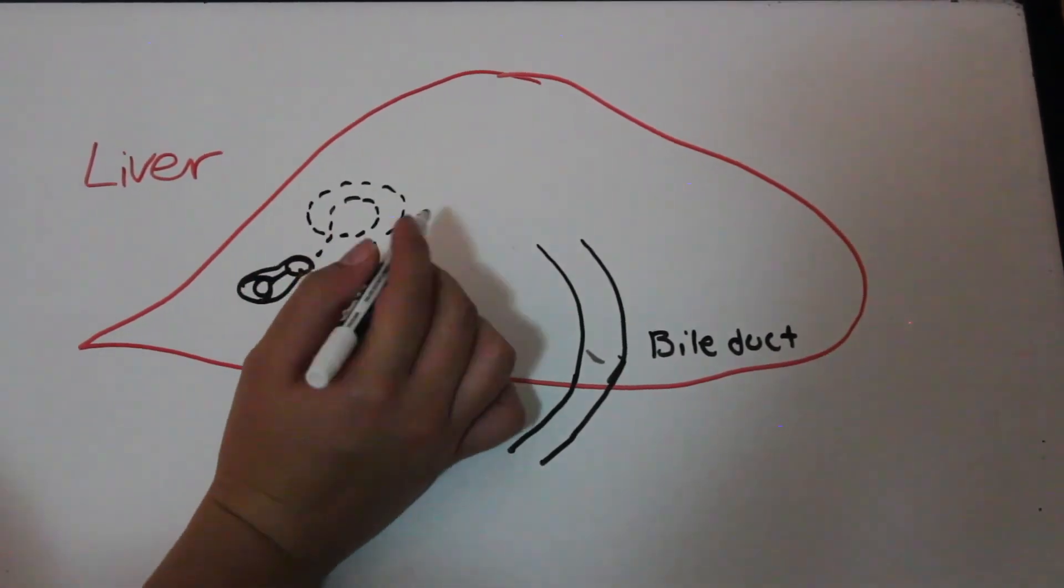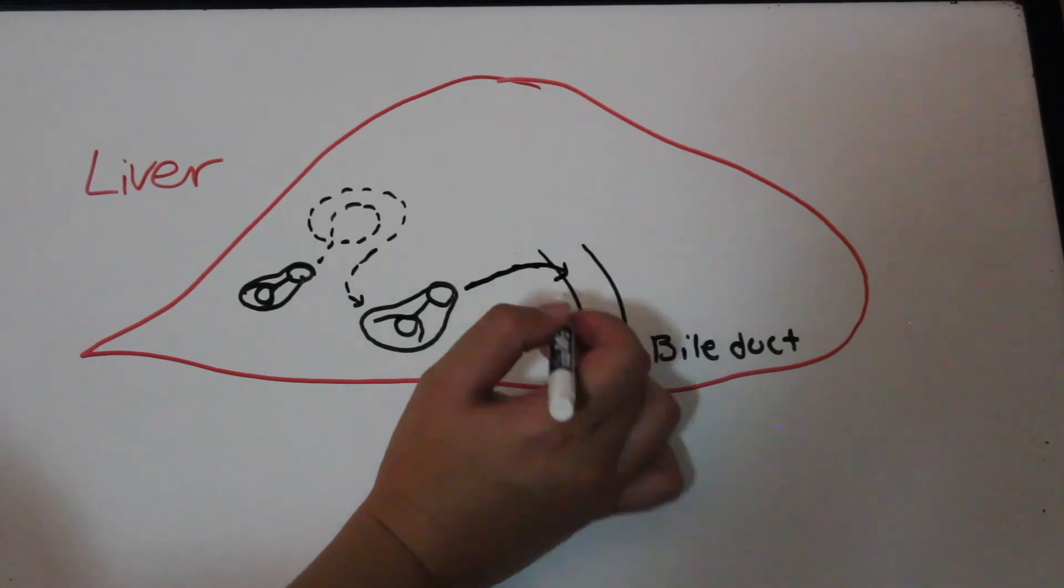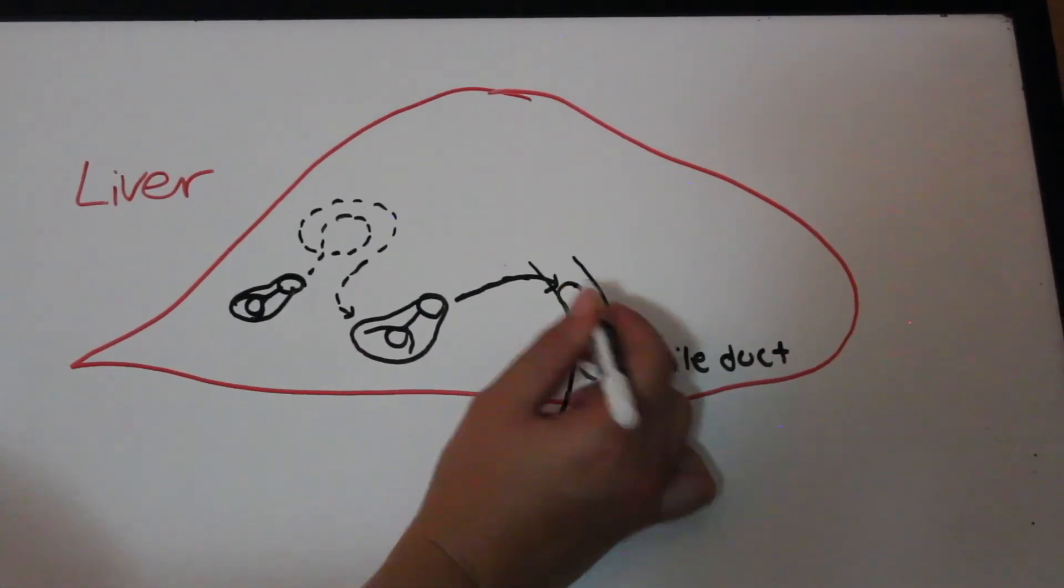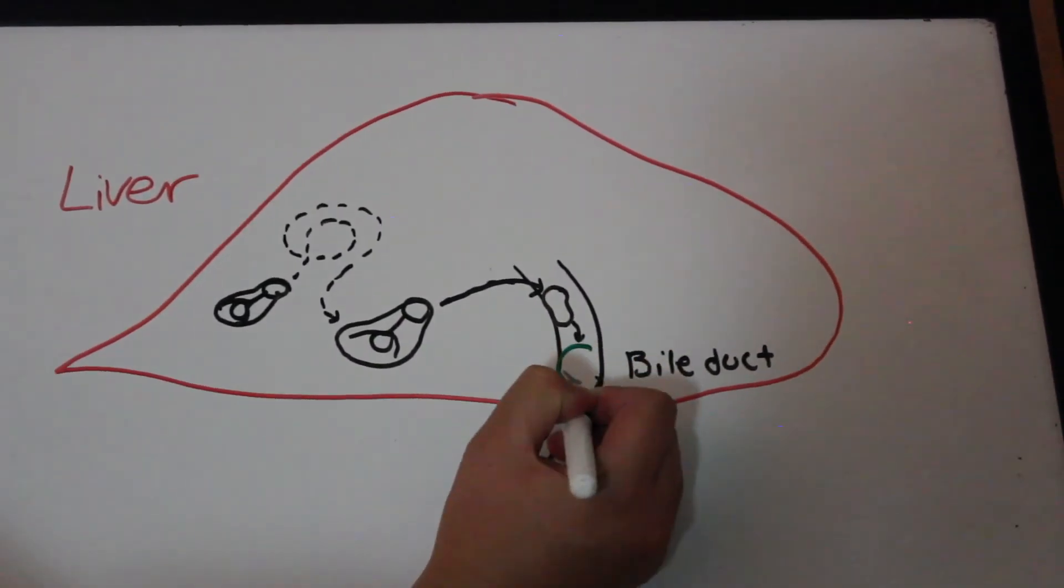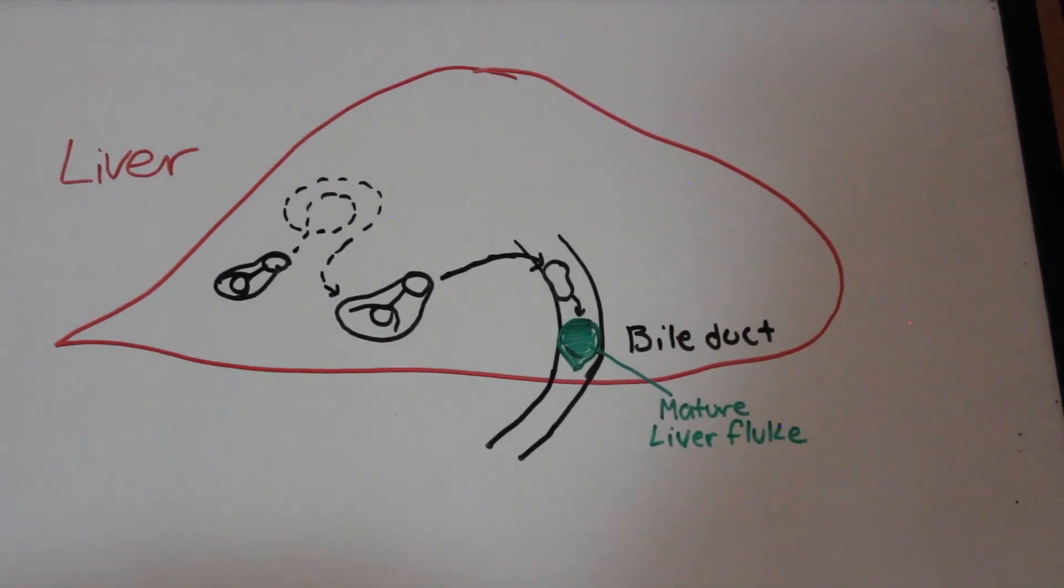After this period, it makes its way to the bile ducts. In the bile ducts, the immature fluke matures into an adult fluke, which begins releasing eggs.